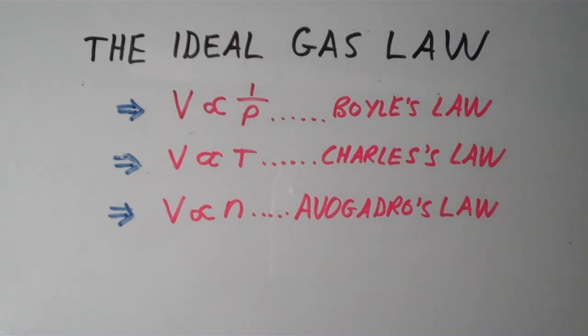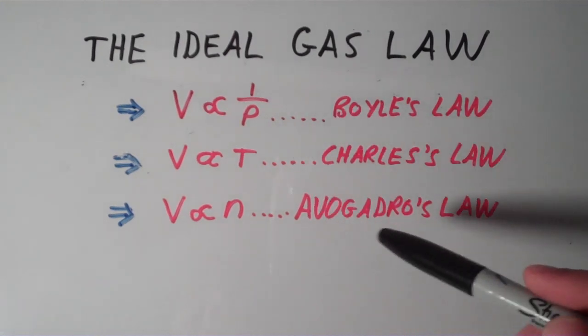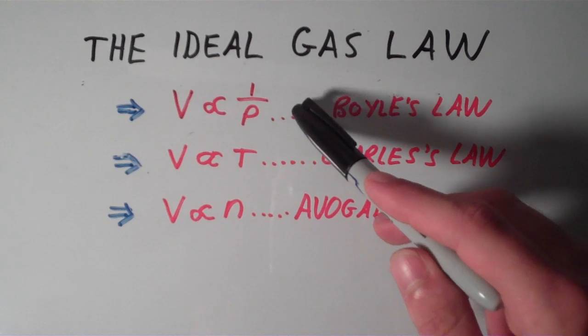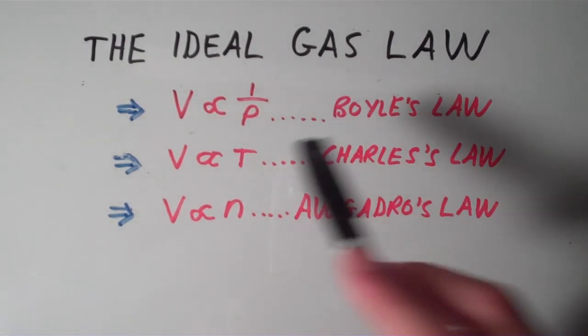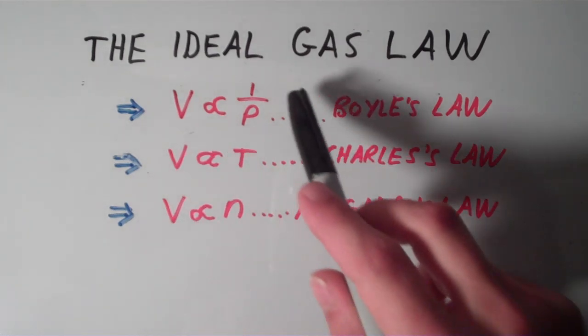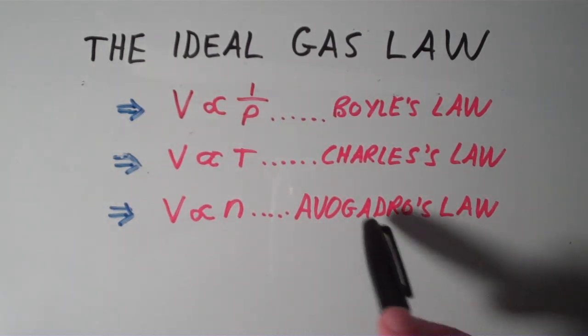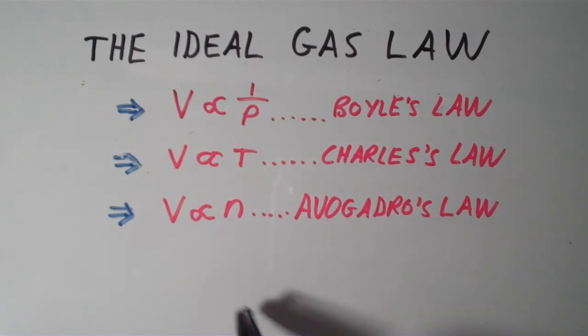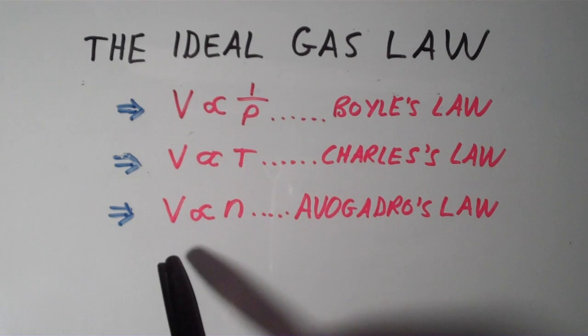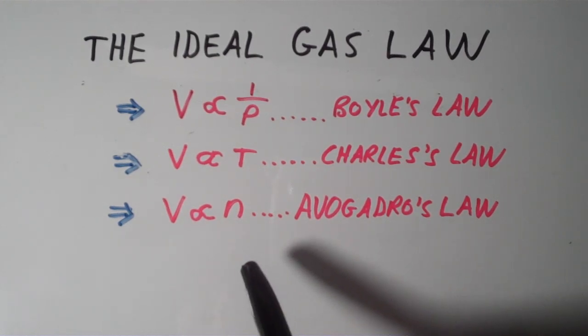So remember that Boyle's law says that the volume is inversely proportional to the pressure of a gas. So it's proportional to the inverse of pressure, so V is proportional to 1 over P. Charles' law says that the volume of a gas is directly proportional to the temperature. And Avogadro's law says that the volume of a gas is also directly proportional to the amount of the gas in moles.